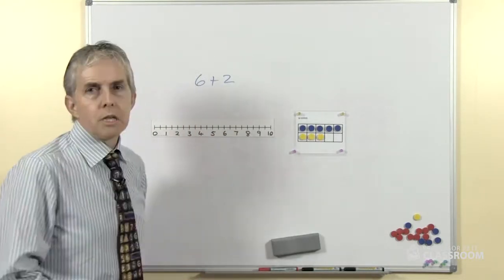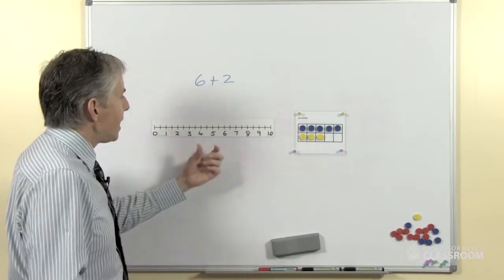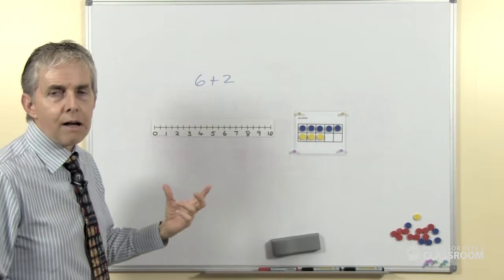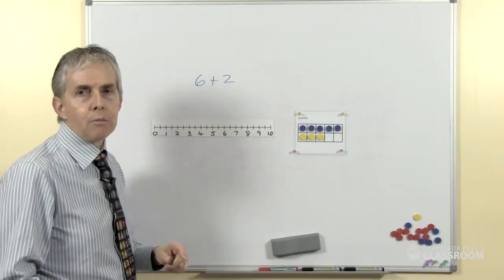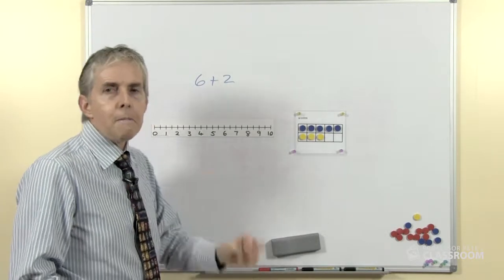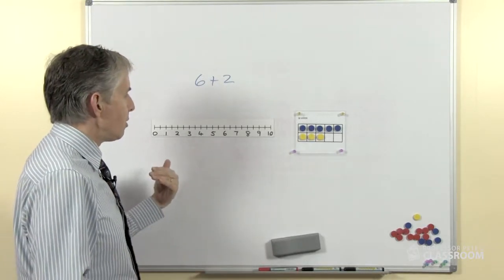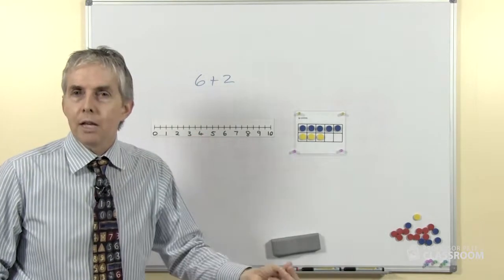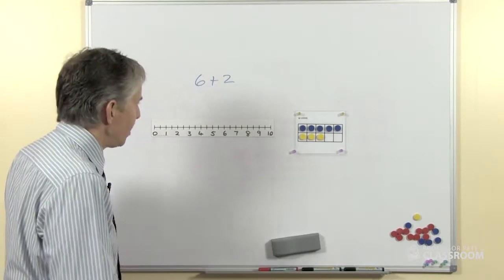Use the number line to visualize the answer. Again, we're not necessarily, or especially when the students are able to do it without actually recording it on the number line, we're not going to say, alright, find the 6, count on 2 more, what number do you get to? That's okay when the students are just learning it, but what ultimately we want them to do is to be able to look at the number line and see what the answer is, or work it out in their head, and then of course do it without the number line.